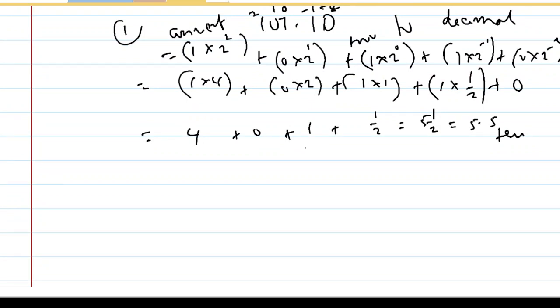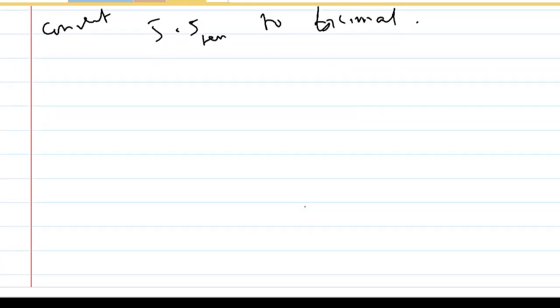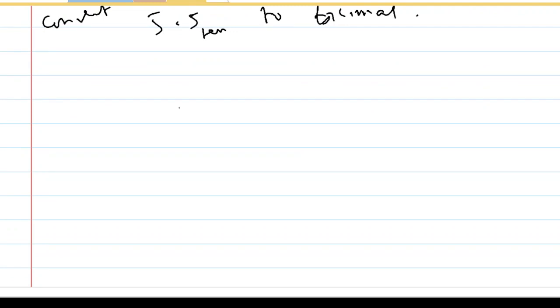So then how do I convert this 5.5 again? You know this is a decimal now, how do I convert it back to a bicimal? Don't forget a bicimal is a number in base 2. It is simple. What you have to do is to first of all convert your integer parts, that is the whole number part. You have to convert it to base 2 first.